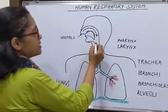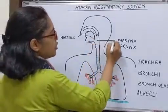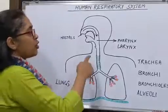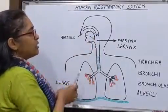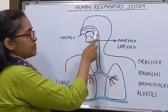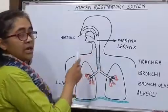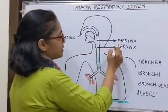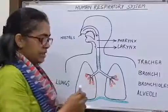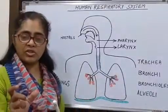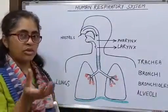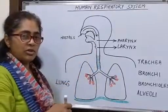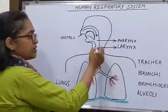The nasal passage opens into a structure called the pharynx. The pharynx is a common opening for both food as well as air. After the pharynx we have the larynx, which is made up of cartilage. It helps to produce sound and is also called the sound box or the voice box.